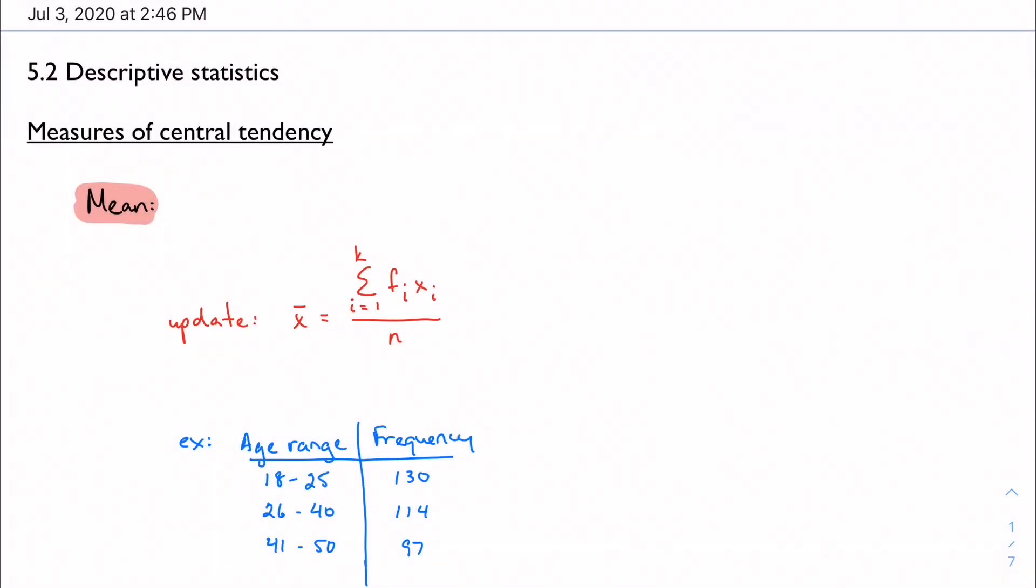Alright, in 5.2, talking about what the book calls descriptive statistics. A lot of this, at least in the first half, is going to be prior knowledge, at least hopefully. So we're going to start with what we call measures of central tendency, and that is just what we refer to as kind of our catch-all term for mean, median, and mode.